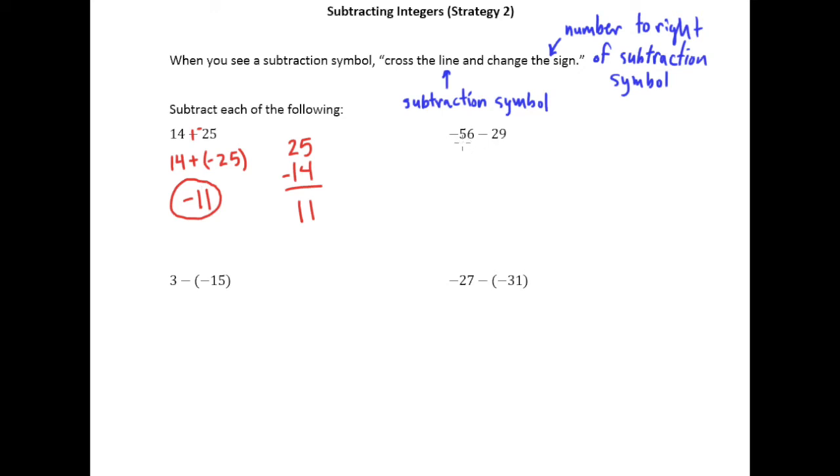Let's go over here to this one: negative 56 minus 29. This is a negative symbol so we're not going to do anything with that. But right here we've got a subtraction symbol. So we are going to cross the line, change the sign.